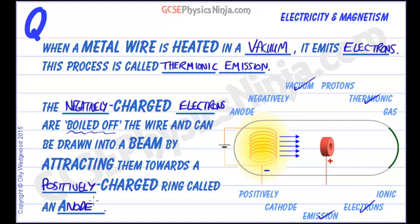If you do chemistry and electrolysis, you'll know that there's an anode and a cathode. The anode is positively charged and the cathode is negatively charged. And so this effect — this thermionic emission effect —